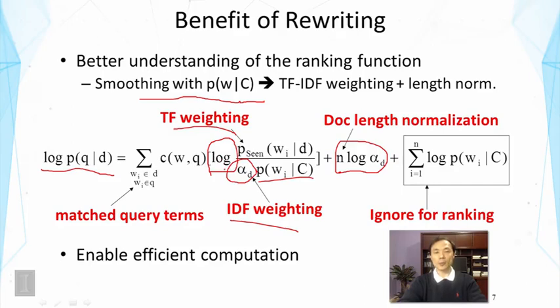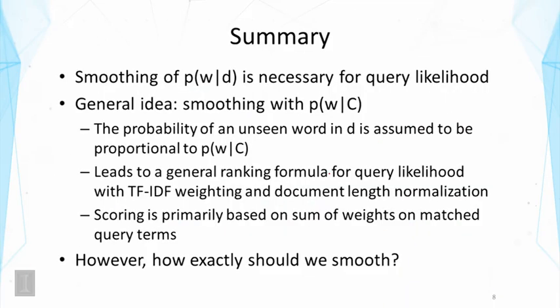So a nice property of probabilistic modeling is that by following some assumptions and the probability rules, we'll get a formula automatically. And the formula would have a particular form, like in this case. And if we heuristically design the formula, we may not necessarily end up having such a specific form.